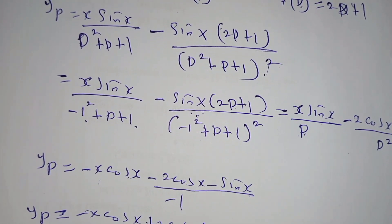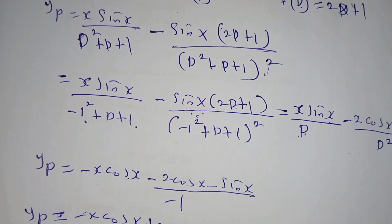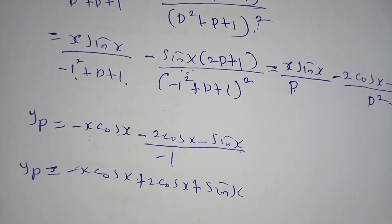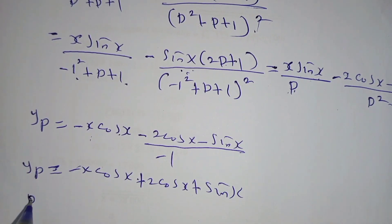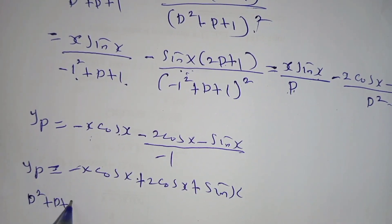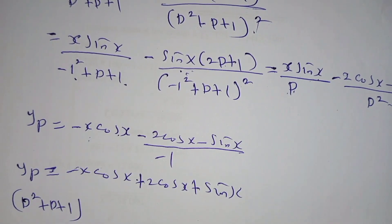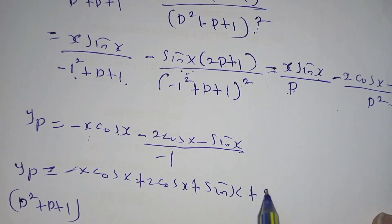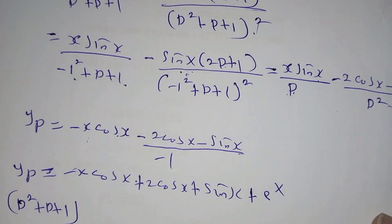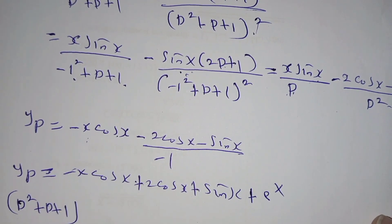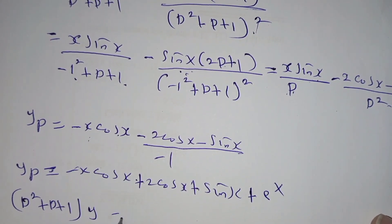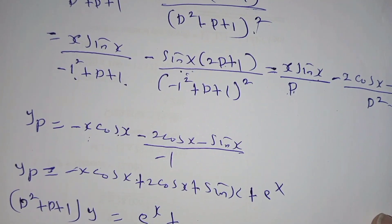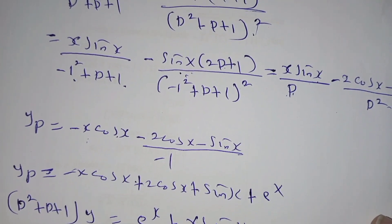Our given ODE was (D² + D + 1)y, with the right-hand side equal to e^x + x·sin(x). So the full particular solution combines both cases.